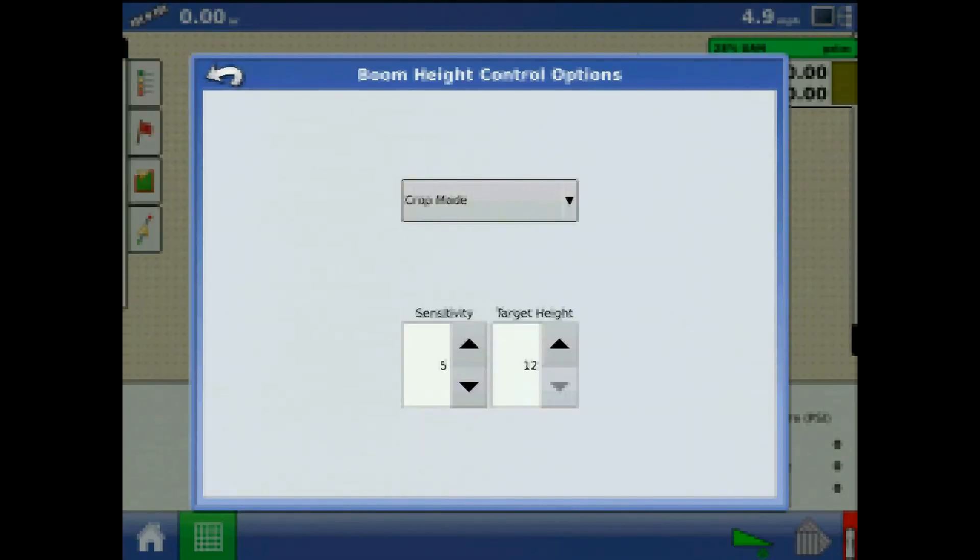Pressing the boom height control options button opens up the option to toggle to soil mode or crop mode and adjusts the response of the height control by sensitivity and target height.